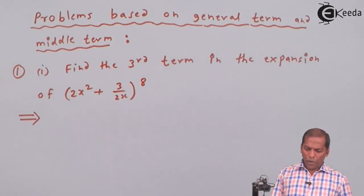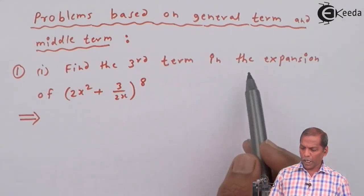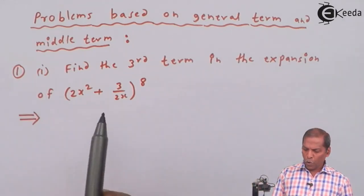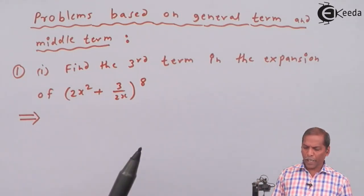Problem number one, sub question one is: Find the third term in the expansion of (2x² + 3/2x)⁸.